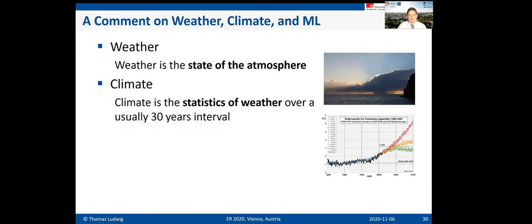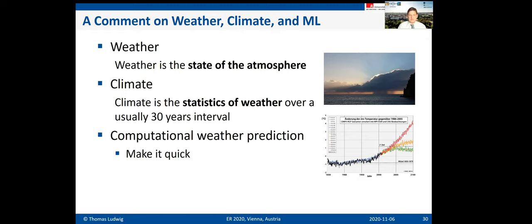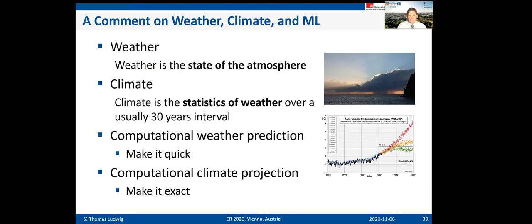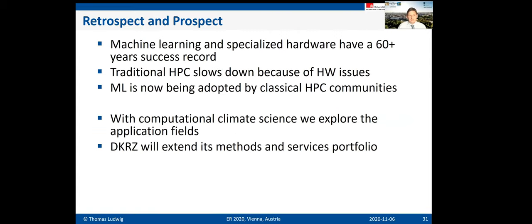Let me make a final remark on weather versus climate and machine learning. Weather is the state of the atmosphere; climate is the statistics of that. Applying machine learning to weather prediction is straightforward — you want a fast result, it is approximately correct, and that is acceptable. But for climate projection, researchers want accuracy, not approximations. Machine learning might produce faster but blurred results, so applying it to climate projection is a genuinely complicated challenge.